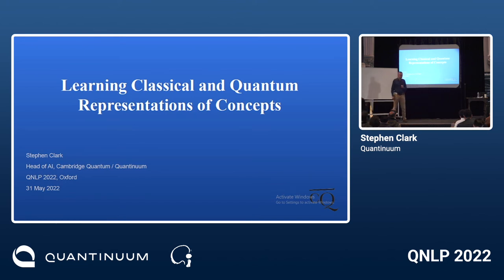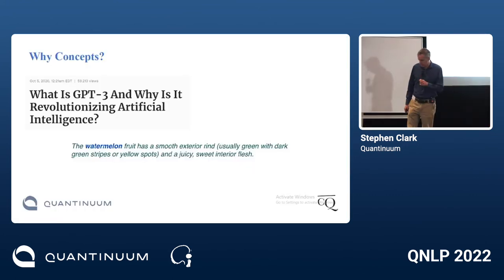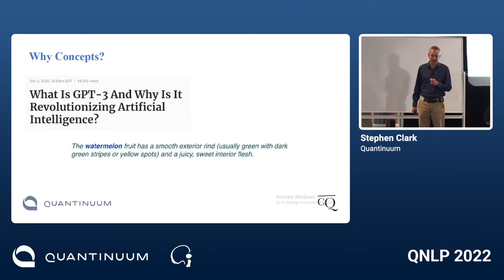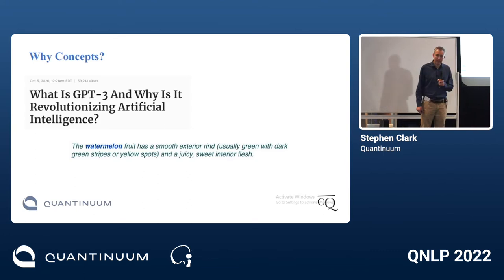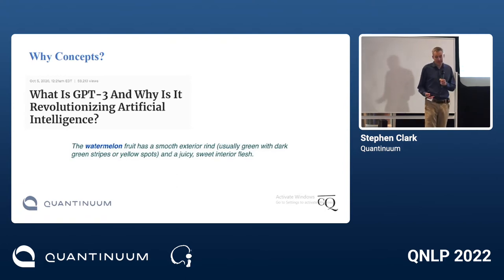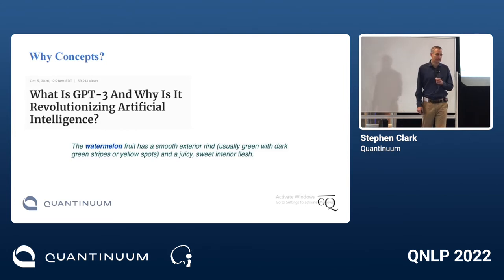This talk is about learning representations of concepts. The first question is: why are we interested in concept learning at all? From a modern AI perspective, let's think about a large-scale language model like GPT-3. We might ask: does GPT-3 have concepts? Does it know about watermelons, for example? It certainly knows something about watermelons.